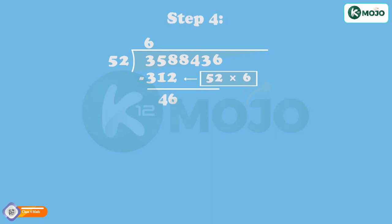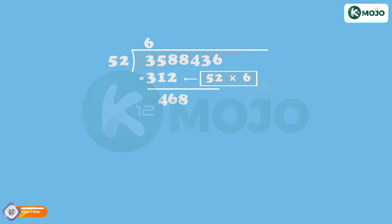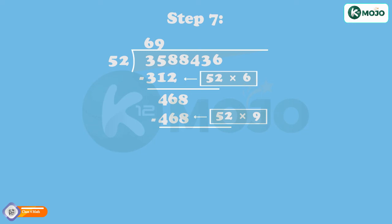Step 4: Bring down 8 making 468. Step 5: Divide 468 by 52. Step 6: 52 goes 9 times in 468. That is, 52 into 9 is equal to 468. Step 7: Subtract — 468 minus 468 is equal to 0.